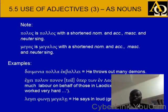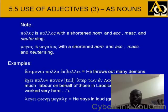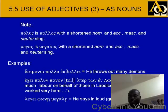On the use of adjectives as nouns: polus is a shortened nominative/accusative masculine and neuter singular; megas is similarly shortened. For example: dikei daimonia polla ekballei — he throws out many demons. Ekei polun ponon huper ton en Laodikeia — he has much labor on behalf of Laodicea; he has worked very hard. Legei phone megale — he says in a loud, great voice.